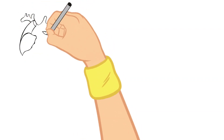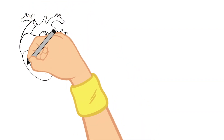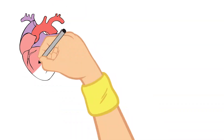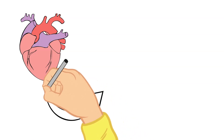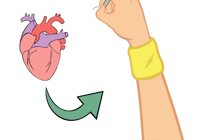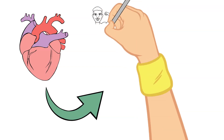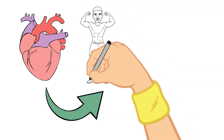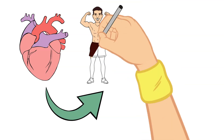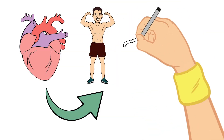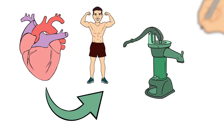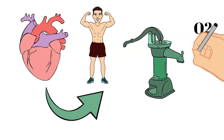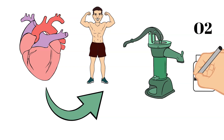The first part of your circulatory system that we're going to talk about today is your heart. We've talked briefly about your heart already in terms of it being a muscle and more specifically the cardiac muscle, but today we're going to talk about how that relates to the circulatory system. Your heart is a muscle and its main job is to pump blood around your body to provide it with the oxygen and nutrients that it needs.